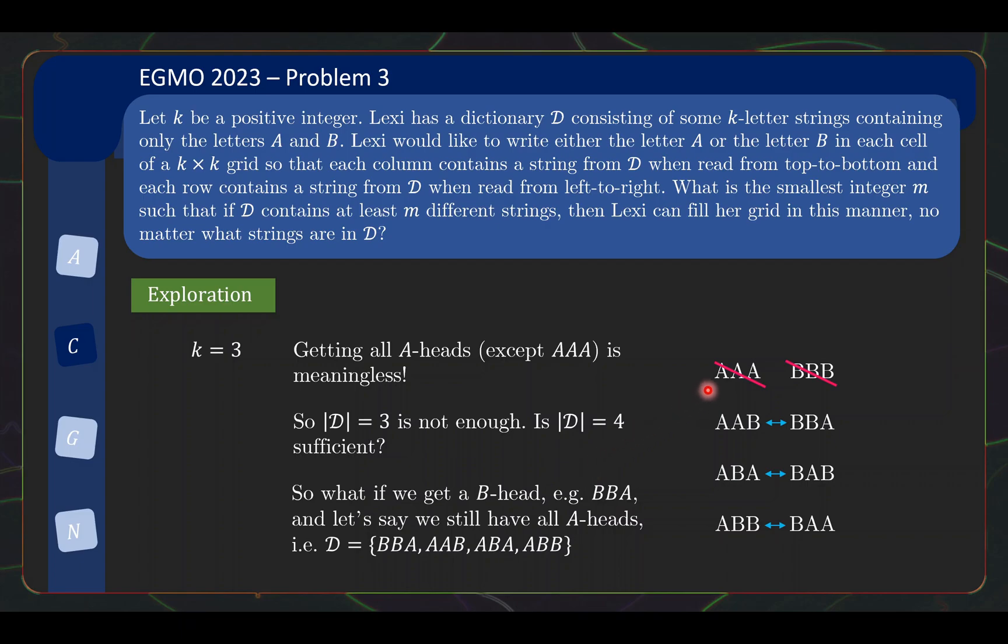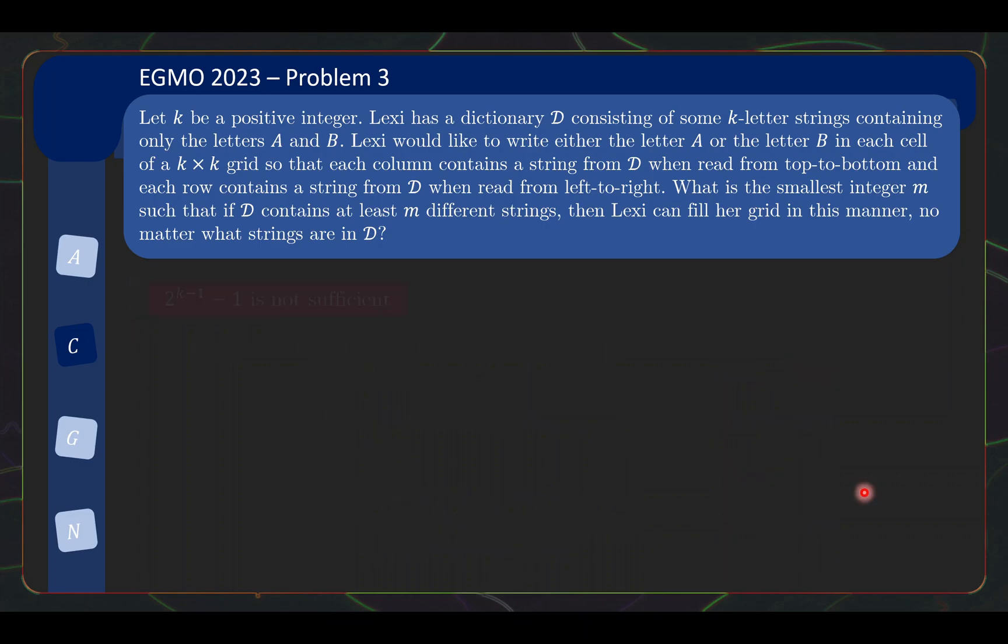Specifically, if we look at all eight possible combinations of words, if we get AAA or BBB we are done, so let's ignore getting those words. Then the remaining six words can be put into pairs, and having at least four words in your dictionary will guarantee you at least getting a pair of complements in your dictionary. So this is the juncture where you realize you have probably solved the problem.